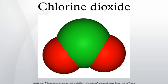Chlorine dioxide is a chemical compound with the formula ClO2. This yellowish-green gas crystallizes as bright orange crystals at -59 degrees Celsius. As one of several oxides of chlorine, it is a potent and useful oxidizing agent used in water treatment and in bleaching.